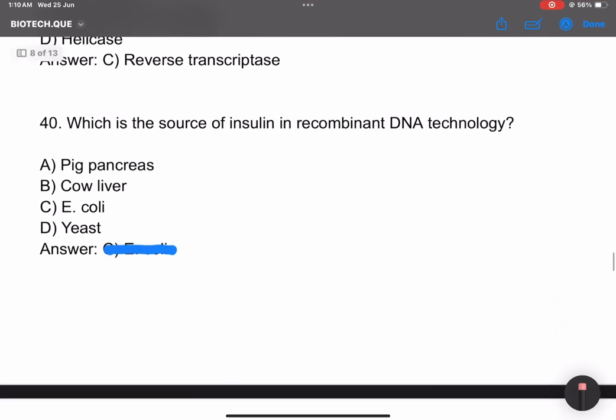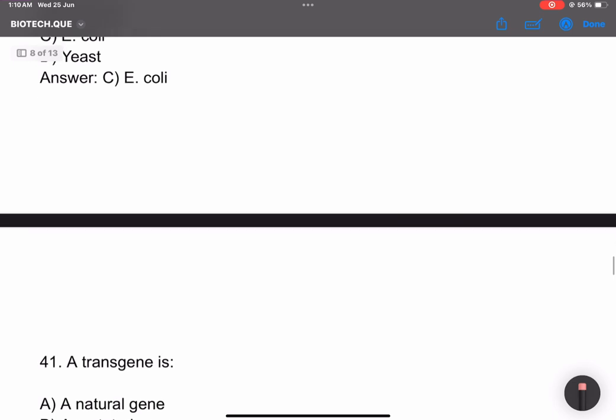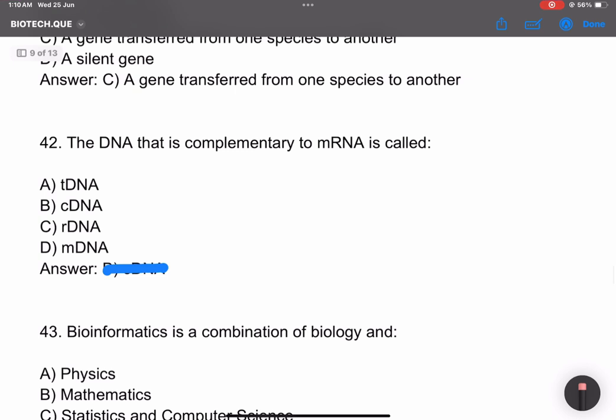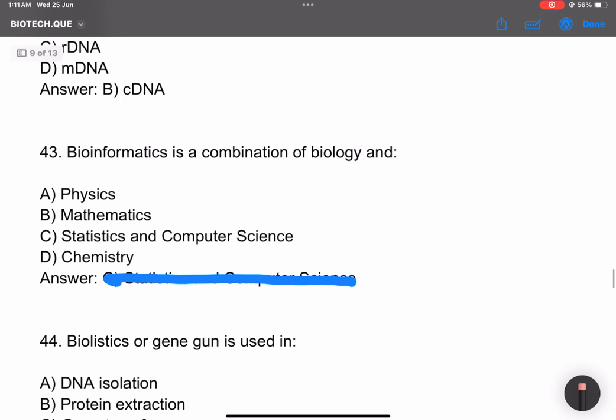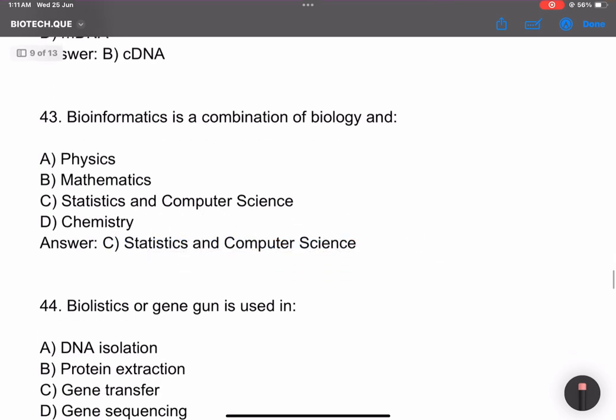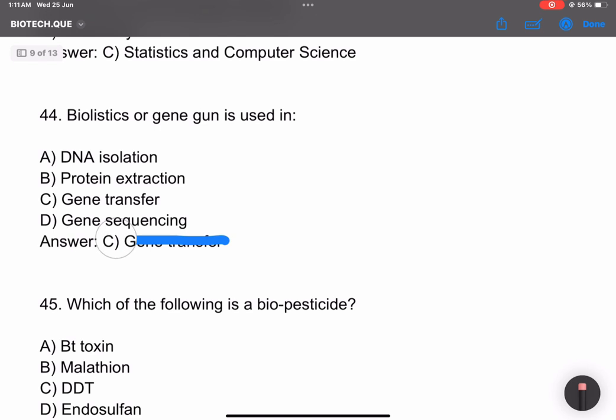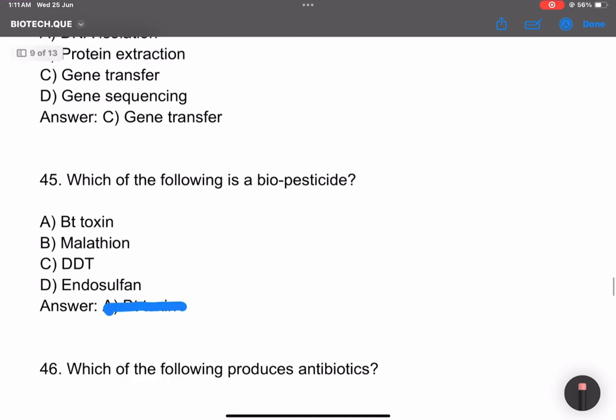Which is the source of insulin in recombinant DNA technology? E. coli. Transgenic means DNA transferred from one species to another. DNA that is complementary to mRNA is called cDNA, complementary DNA. Bioinformatics is a combination of biology, statistics, and computer science. Biolistic or gene gun is used in gene transfer.